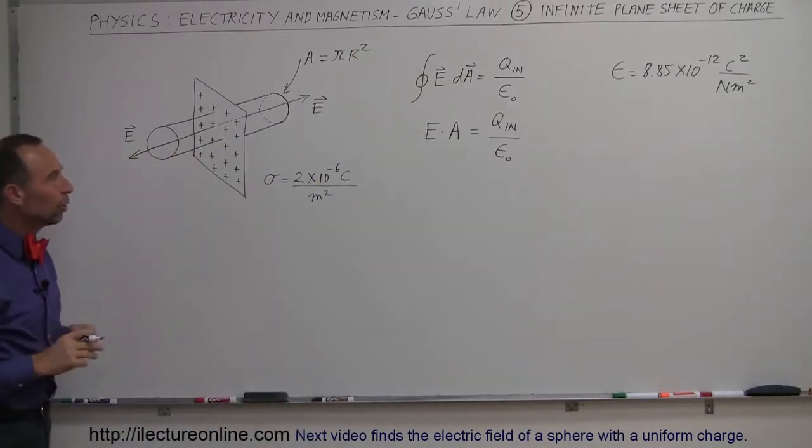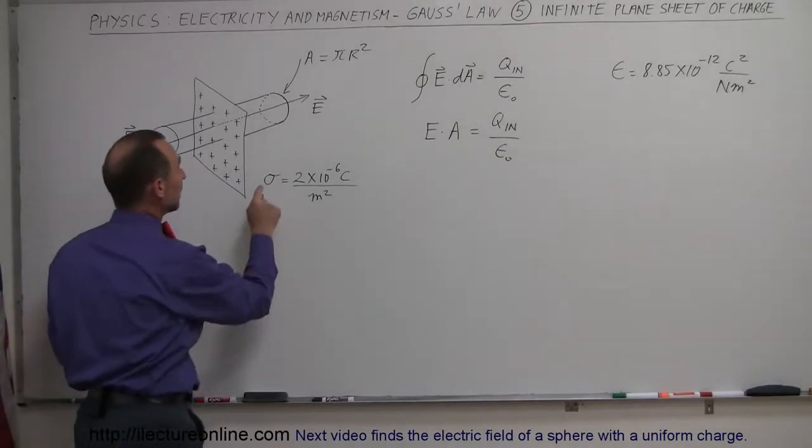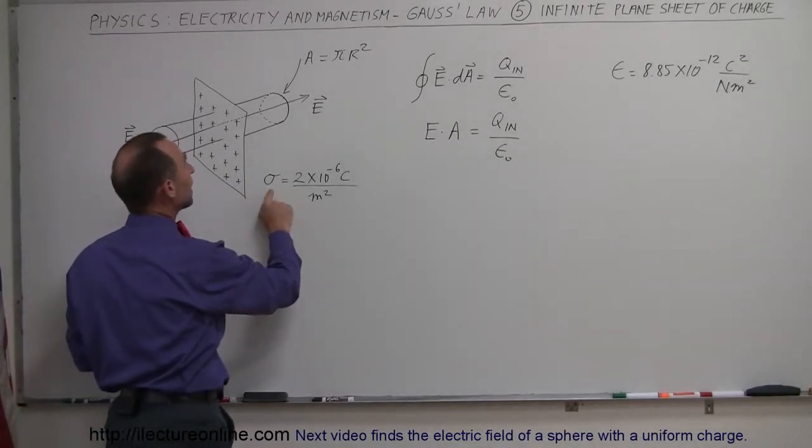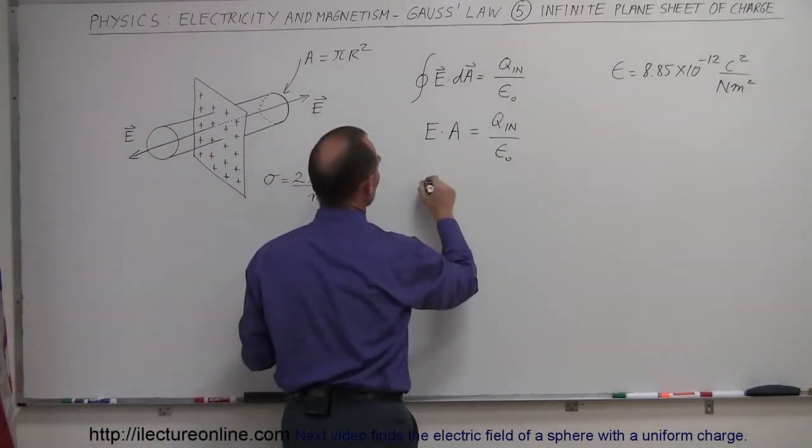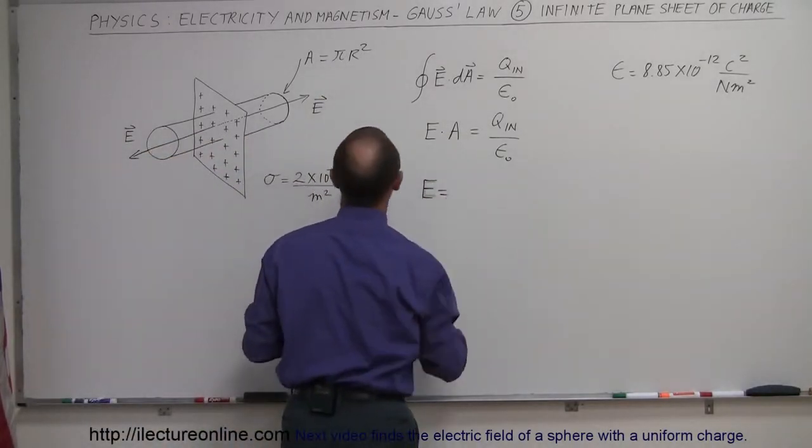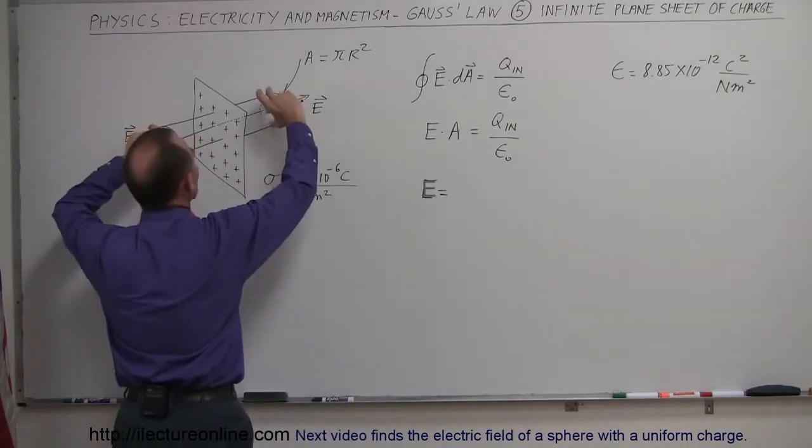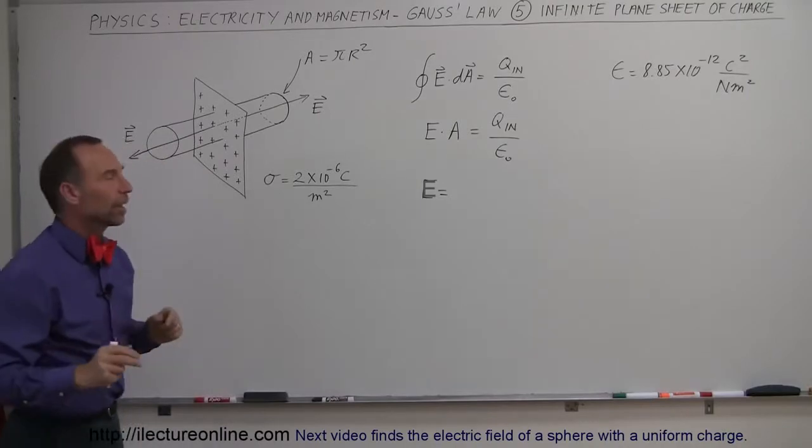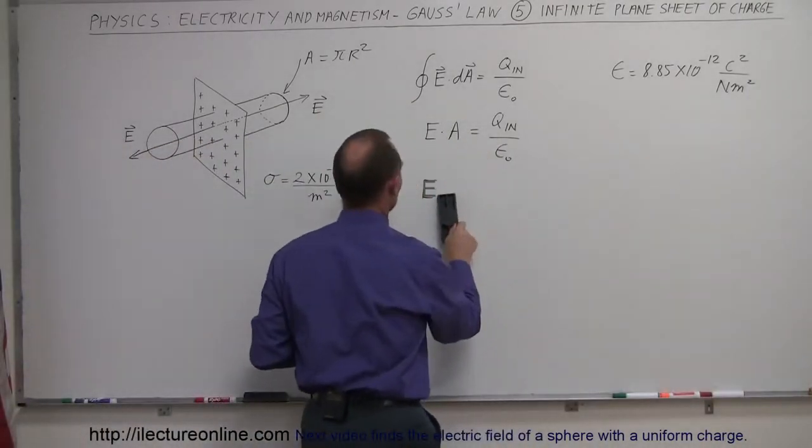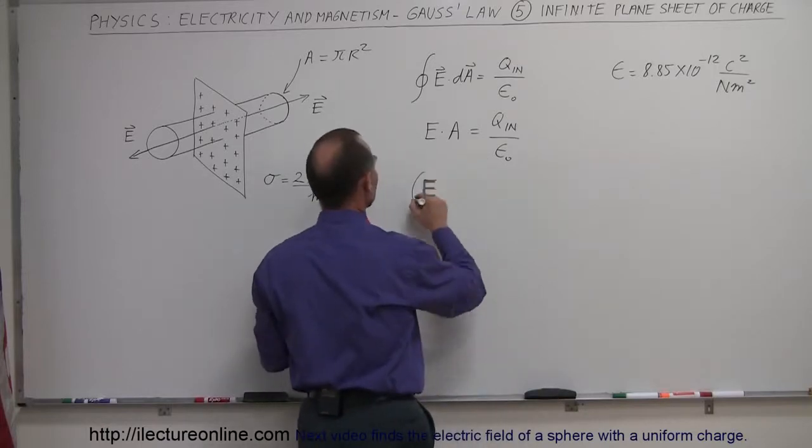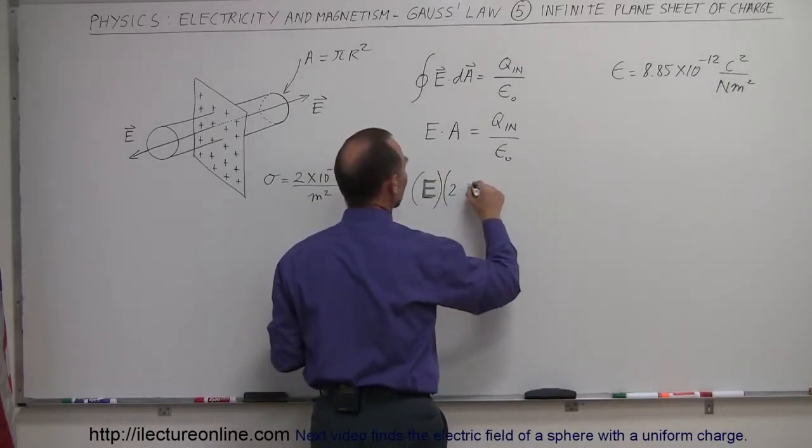Okay, so the q inside can then be calculated by finding the density, the surface density, and multiplying times the area. So let's go ahead and do that. The electric field strength E will be equal to, now since we have electric field emanating on both ends, we have to take both ends of the cylinder into account. So it will be the electric field strength times 2 times pi r squared.